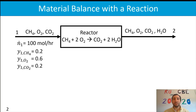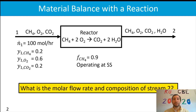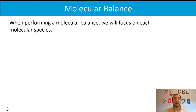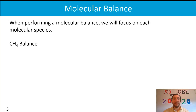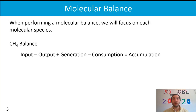I'll give you a couple of other pieces of information: the fractional conversion of methane is 0.9, and we're operating at steady state. Our goal is to determine the molar flow rate and composition of stream two. When performing a molecular balance, we focus on each molecular species — you can pick any one. We'll start with methane, and we go back to our general material balance: input minus output plus generation minus consumption equals accumulation, simplifying as much as possible.